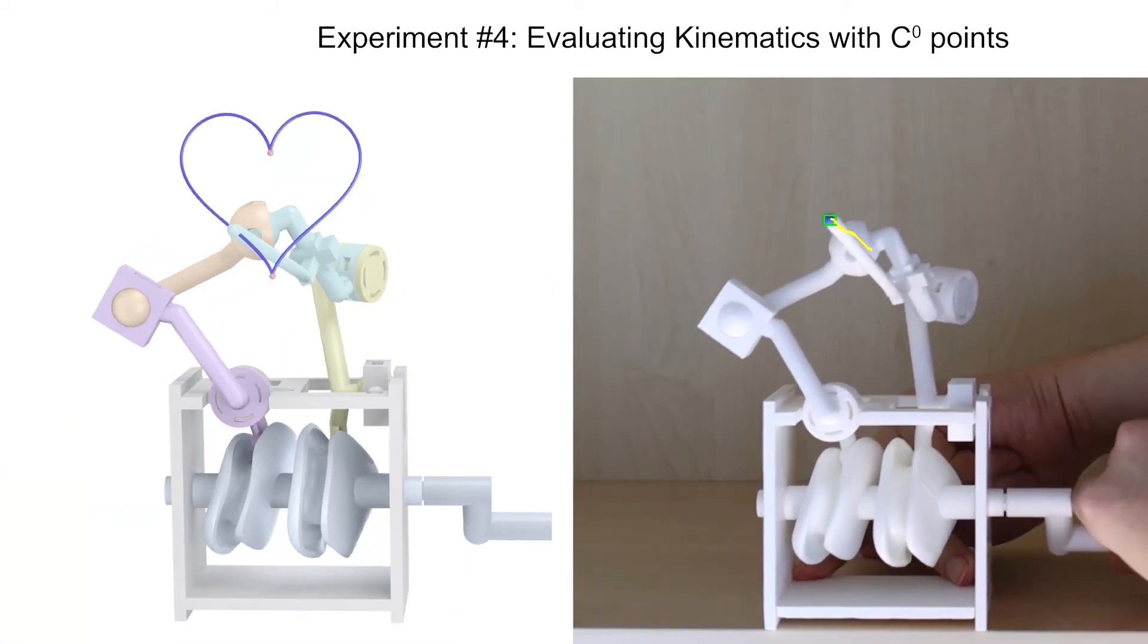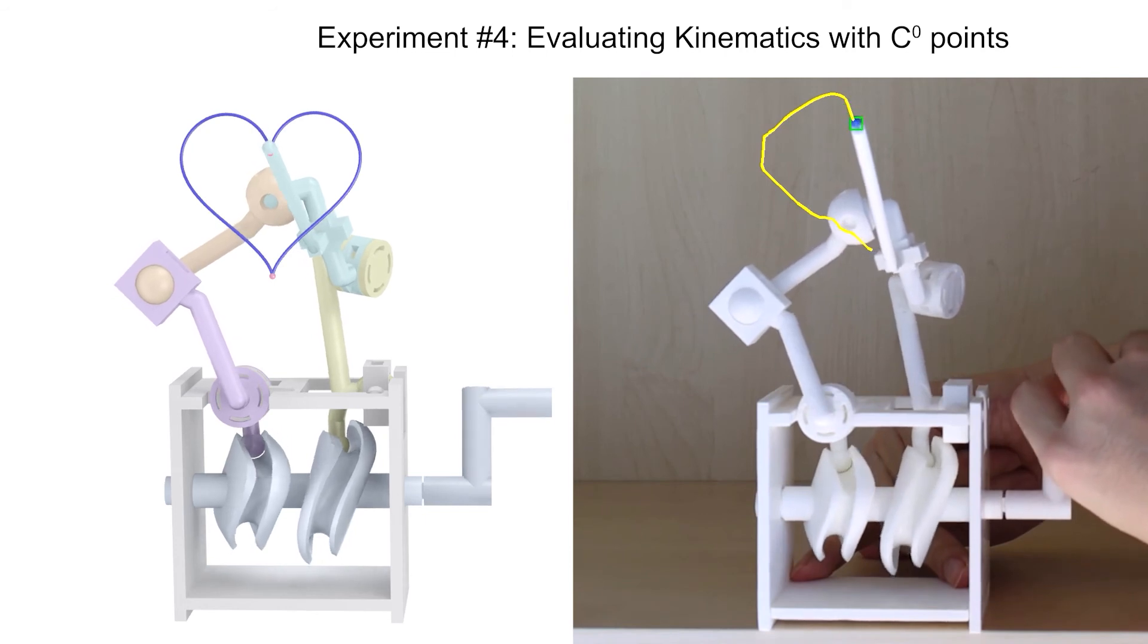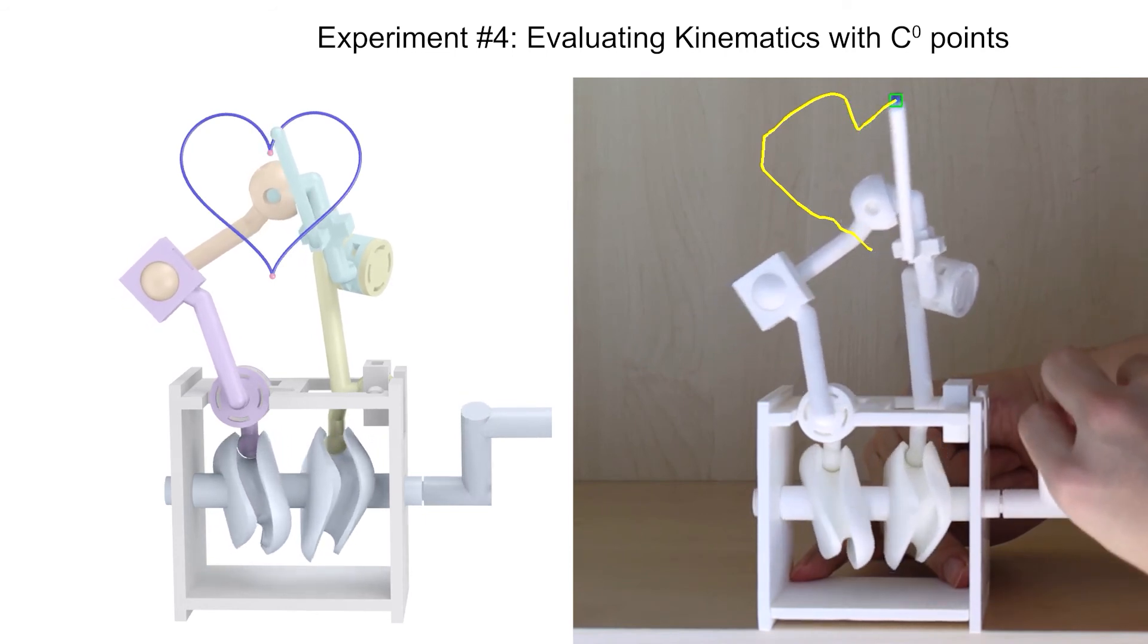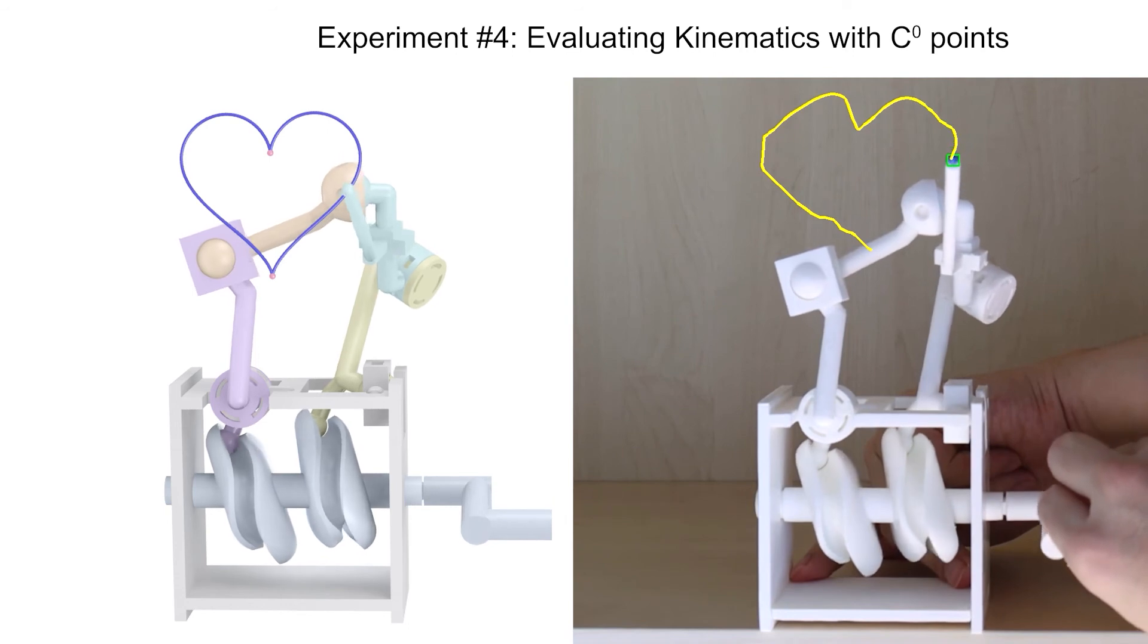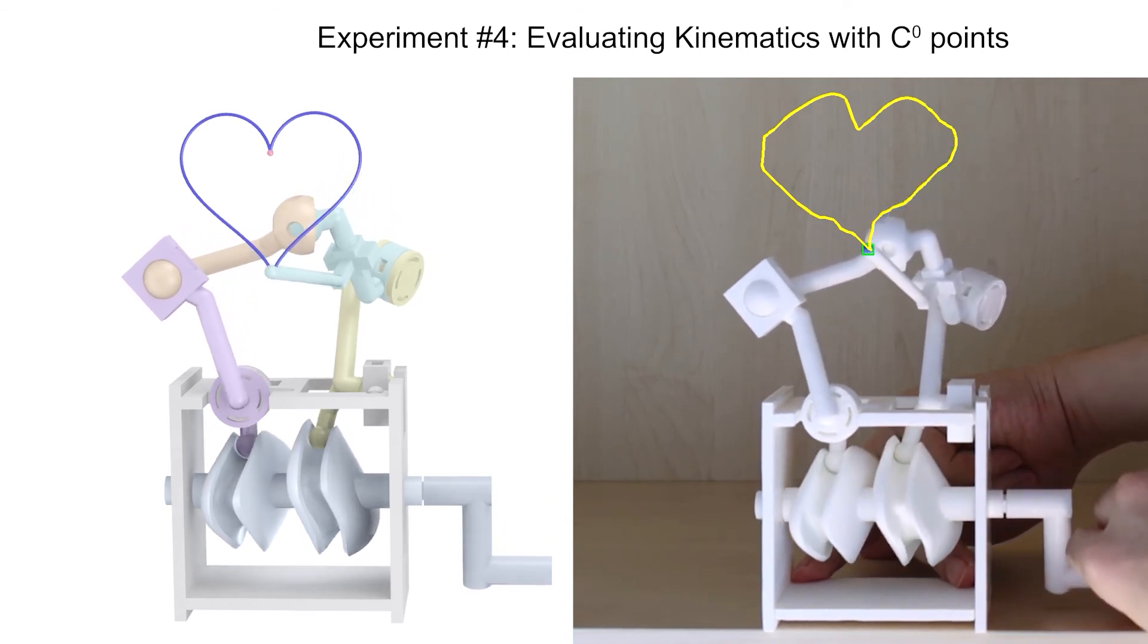Evaluating kinematics with C0 points. We 3D printed a 3D cam linkage that can draw a planar heart curve with 2 C0 points. The tracked curve as well as its C0 points are very close to the virtual counterpart.